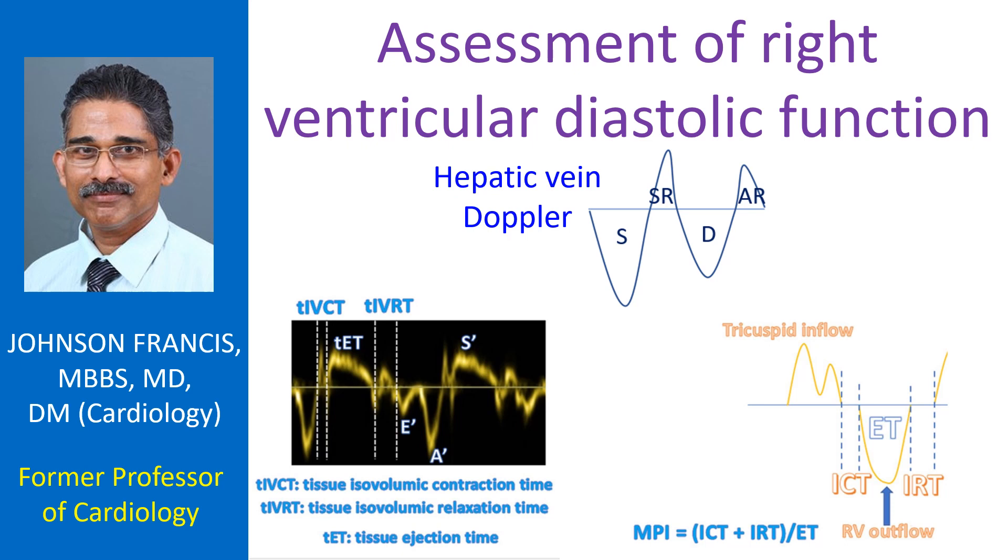An RV-focused apical 4-chamber view is used for the assessment of right ventricle. In the RV-focused view, the transducer is adjusted from the standard apical 4-chamber view to have the right ventricle in the center of the image, rather than the usual image centered on the left ventricle.